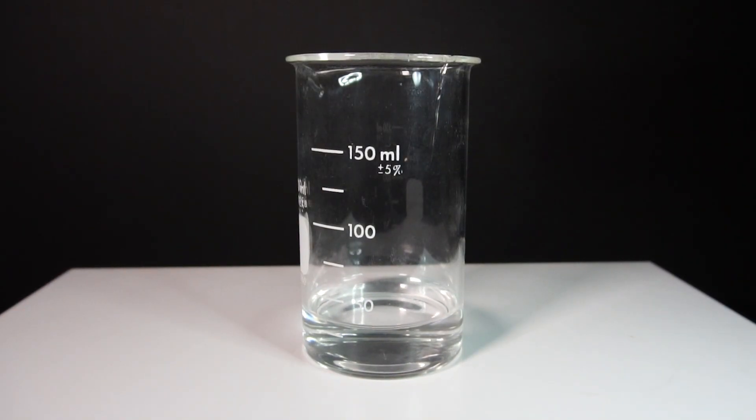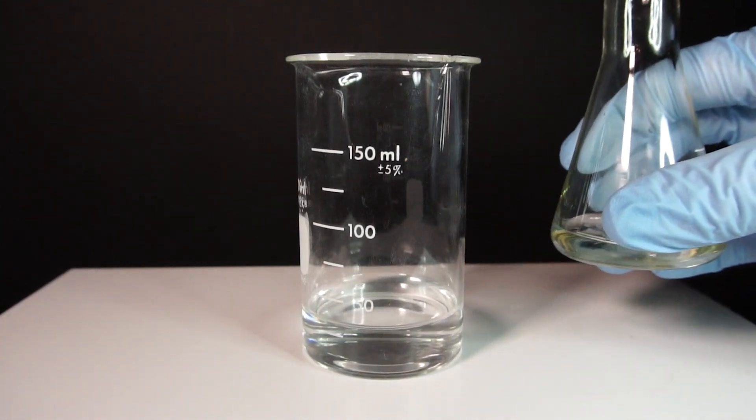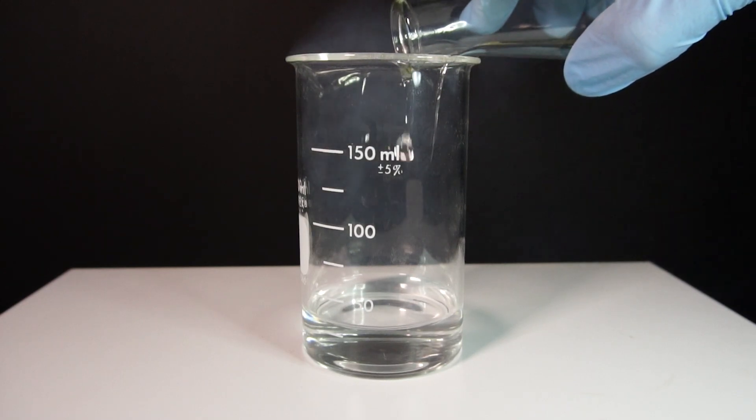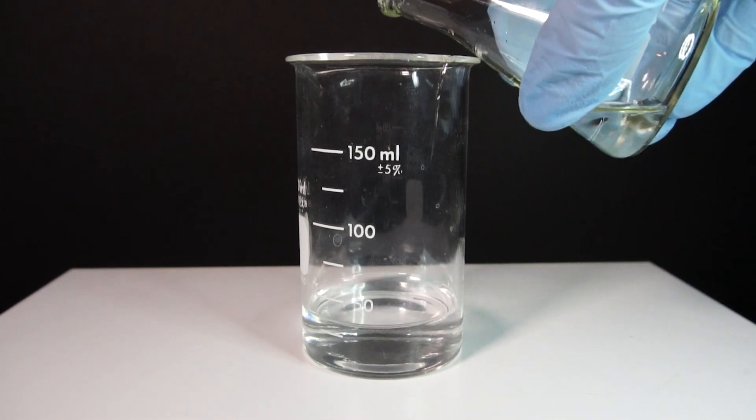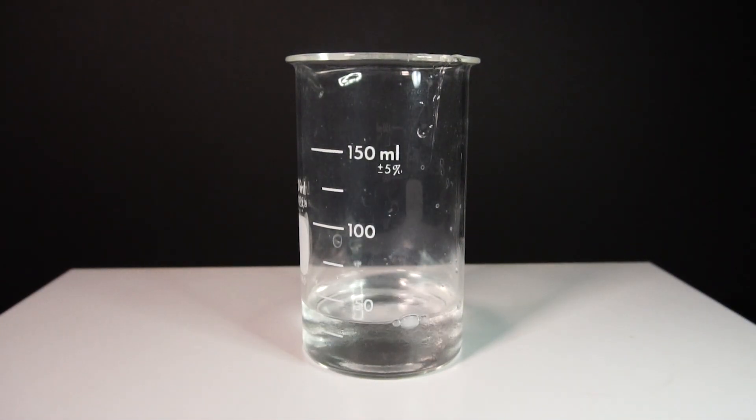First, we will add 30ml of ammonium hydroxide into a beaker and about 10ml of hydrochloric acid into a flask. Both of these chemicals are gases dissolved in water and they fume at room temperature. When the fumes come together, it makes a thick white smoke which is small particles of ammonium chloride being created.